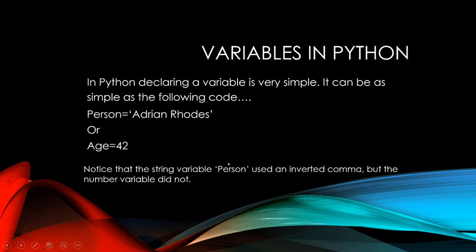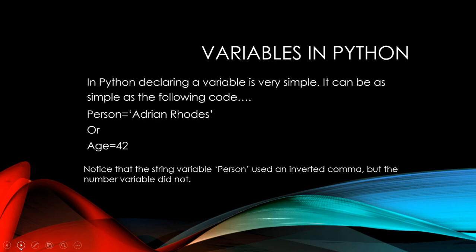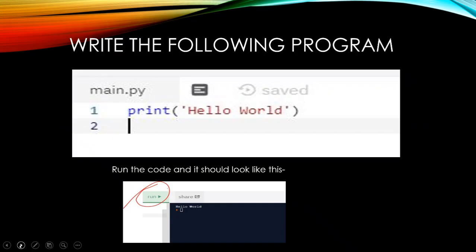Notice that the person - the string - has inverted commas around it, whereas the number variable does not. So we're going to go to this particular website, it's called repl.it, languages Python. And we're going to have a look at the IDE. This is what I just showed you before - the print hello world. I would like you to have a go at that particular piece of code.